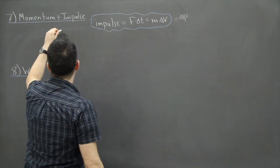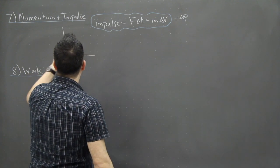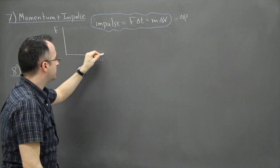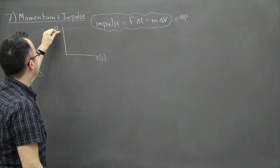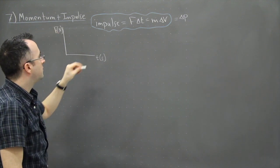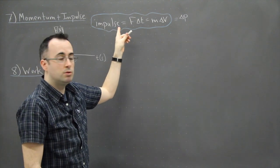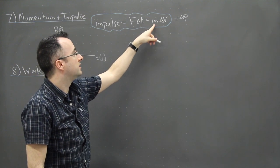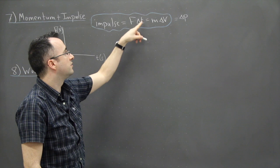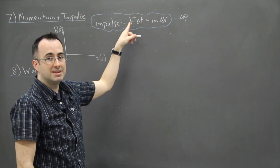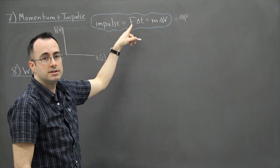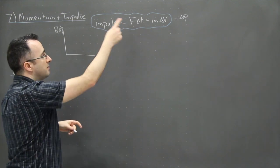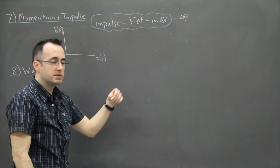If we looked at a graph of force versus time, this could be time in seconds, this could be force in newtons. Impulse is going to have the same units as momentum, which is kilogram meters per second. This is also the same because force is kilogram meter per second squared, so when you multiply that by time you get kilogram meters per second.